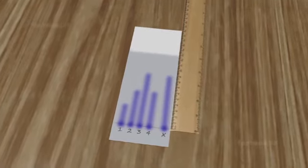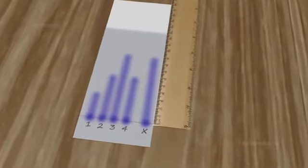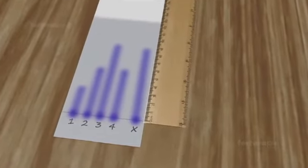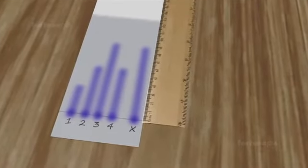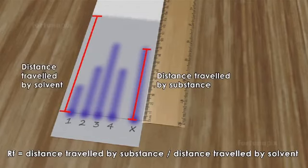The distance traveled by the substance relative to the solvent is a constant for a particular compound as long as everything else is constant. It can be found by using the formula: Rf equals distance traveled by substance divided by distance traveled by solvent.